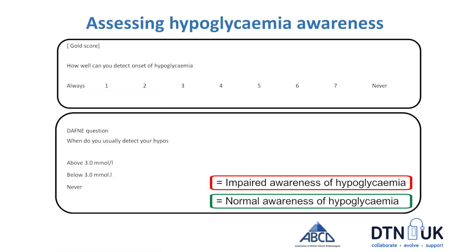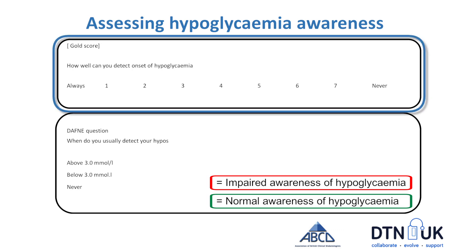Common ways of assessing hypoglycemia awareness are two validated scores. There's something called the Gold score, which asks a very simple question: how well do you detect the onset of hypoglycemia? Where one means always and seven means never. If you score one or two, it means that you pick up your hypoglycemia more often than not. If you're scoring between five and seven, then you've got a bit of impaired awareness of hypoglycemia. People who score at that side have a five to six times higher risk of having a severe hypoglycemic event.